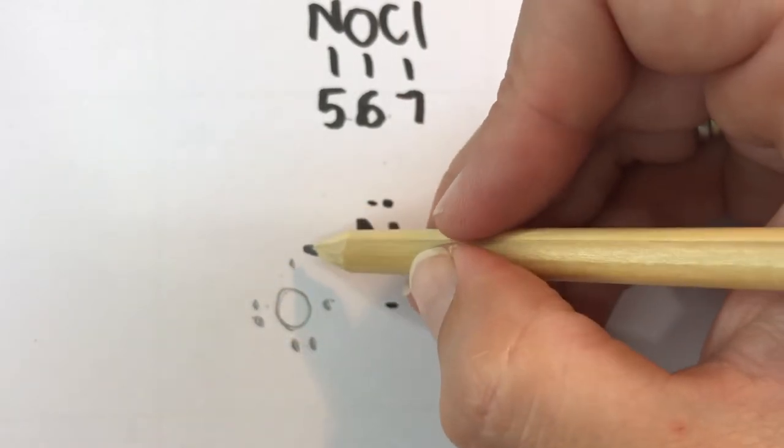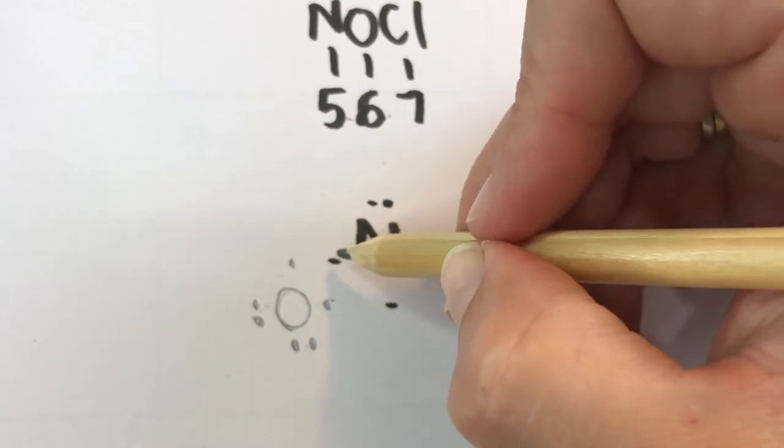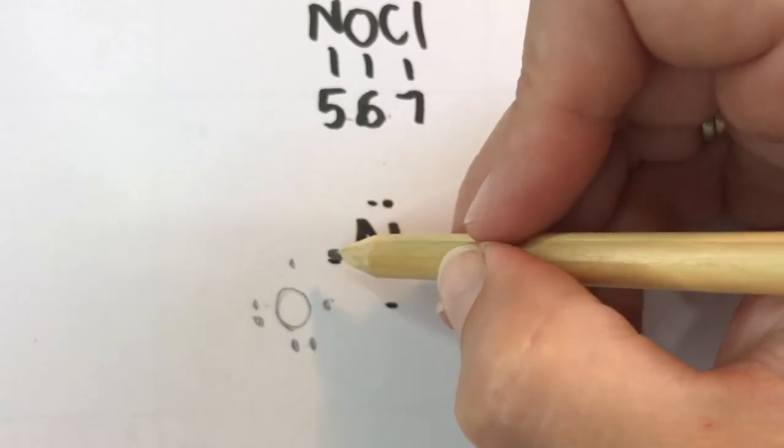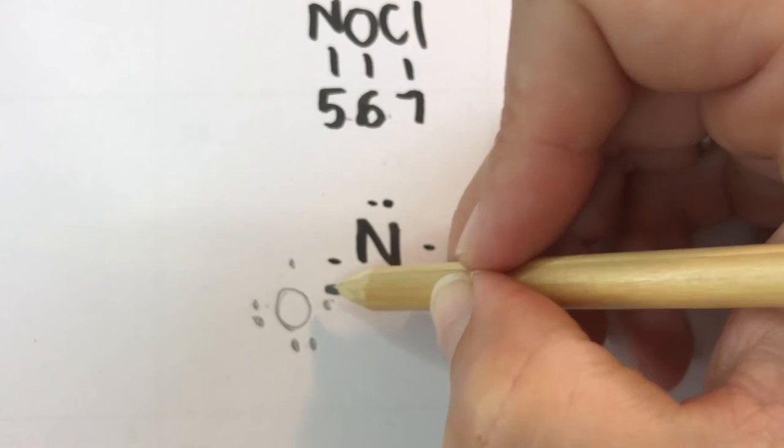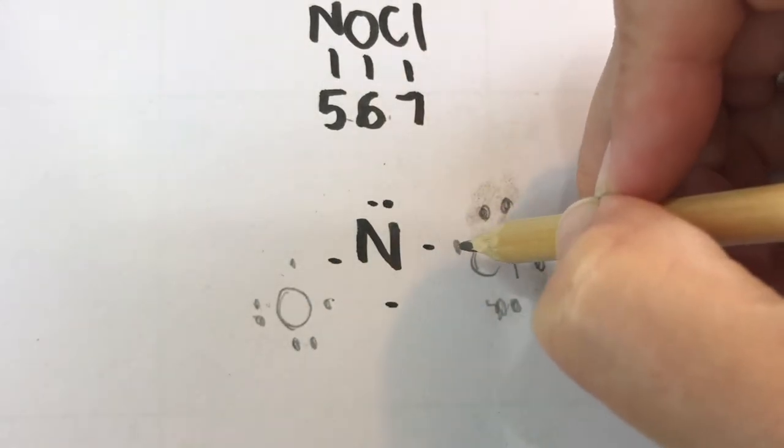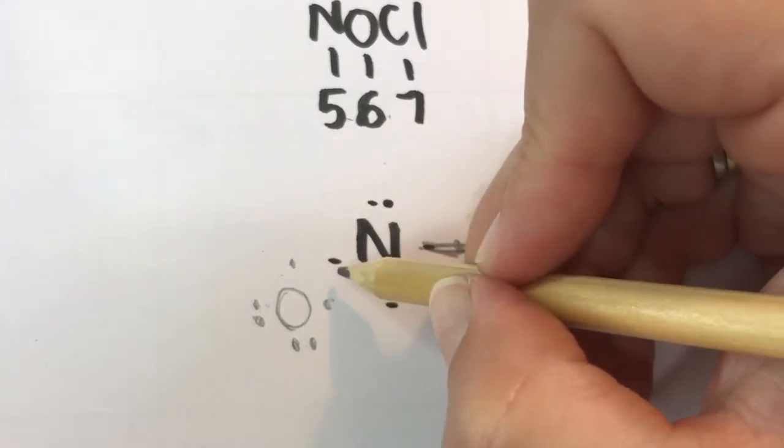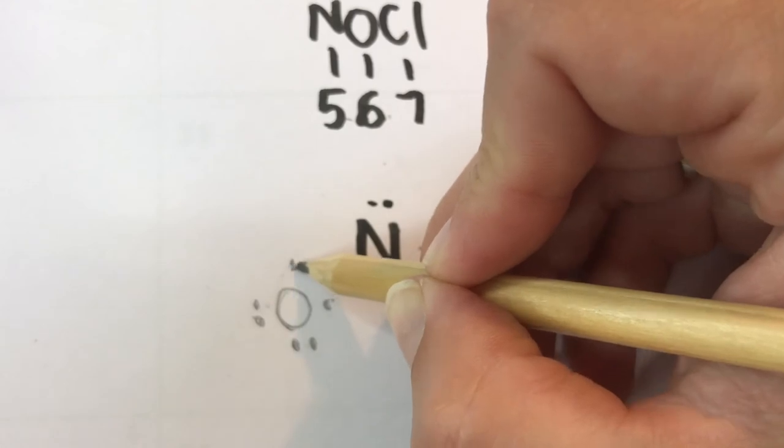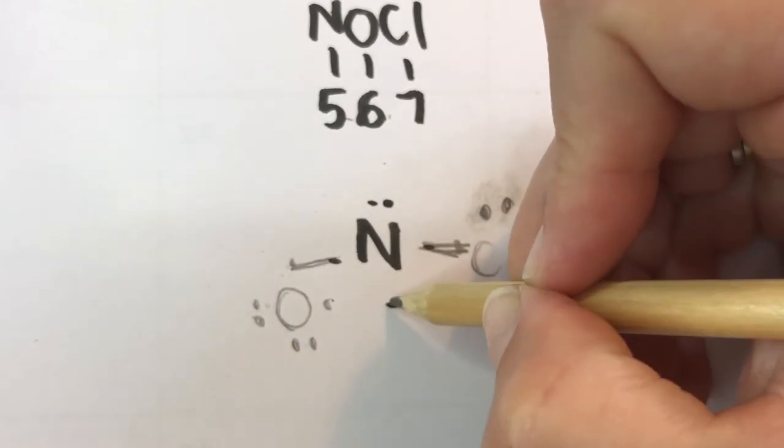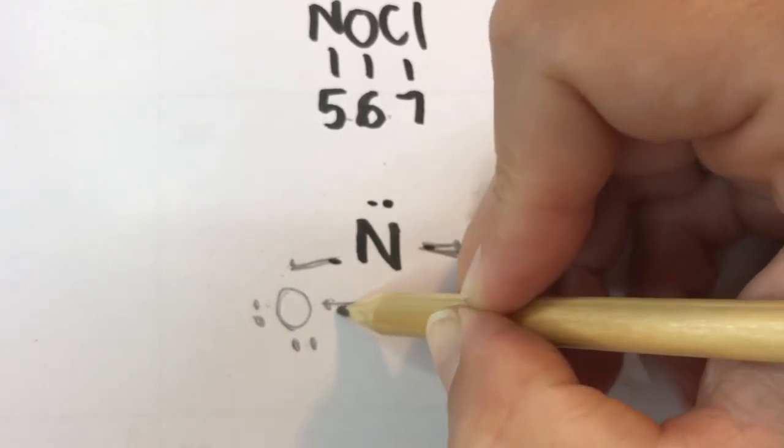And so now what I'm going to do is I'm going to look for areas where the oxygen and the nitrogen both have a single electron, and the same for the chlorine, and I'm going to join those up with a line. So here the nitrogen and the oxygen have a single electron, and here they have a single electron.